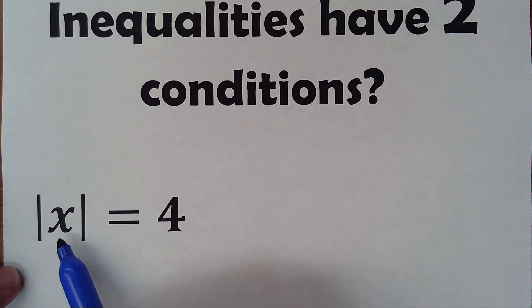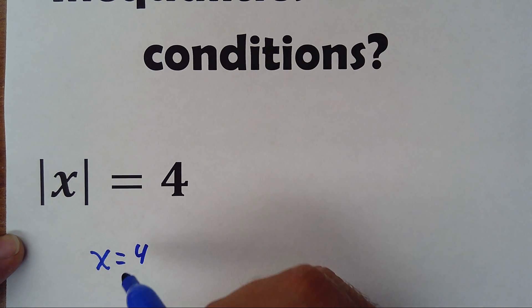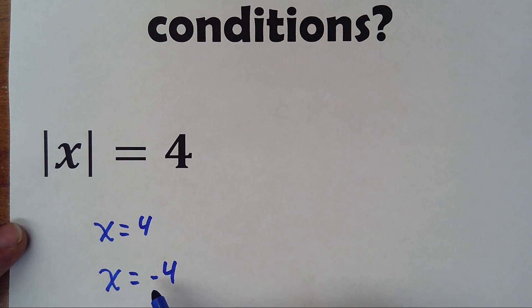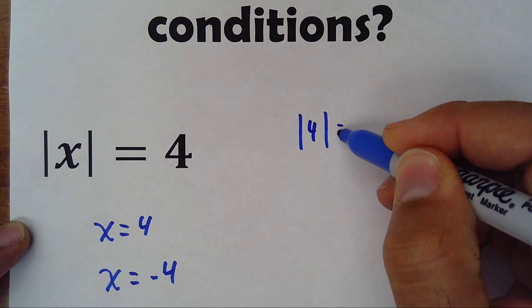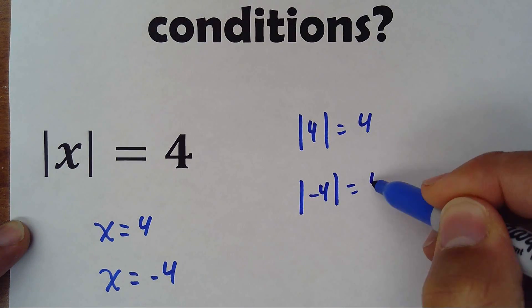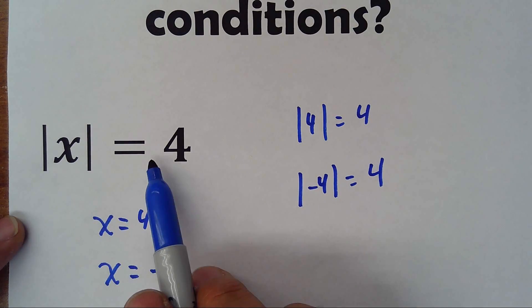So absolute value of x equals 4. That means that x could be equal 4 or x could be equal negative 4. For those two numbers this is true because remember that absolute value of 4 equals 4, but also absolute value of negative 4 equals 4. So if x is 4 or negative 4 this would be correct, that would be true.